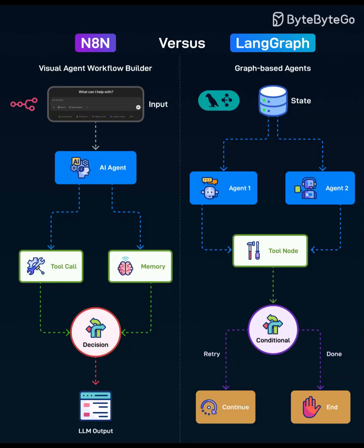Welcome back to Bizai. There are two dominant patterns for building AI agents today: visual workflow builders like N8N and graph-based frameworks like LangGraph. Both wire up tools, memory, and decisions around an LLM, but they optimize for different things — speed to assemble flows versus precise control of state and branching logic. Let's compare them with the same mental model.